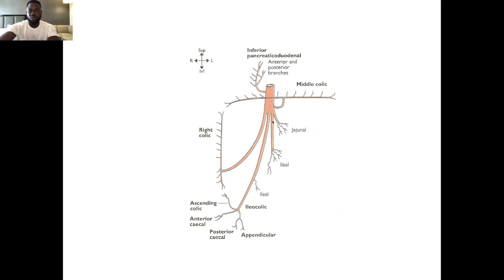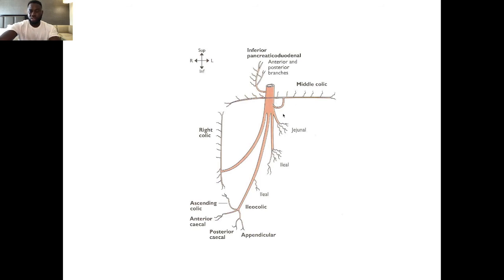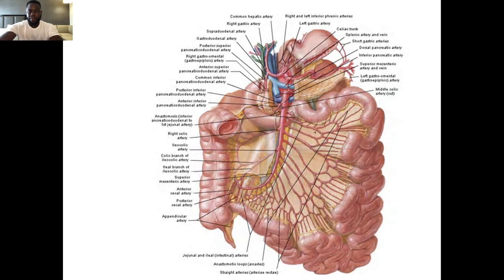To summarize the SMA: it supplies the midgut, which extends from the second part of the duodenum to the first two-thirds of the transverse colon. Its branches include the inferior pancreaticoduodenal artery, the jejunal branches, the ileal branches, the ileocolic branch (with appendicular, anterior and posterior cecal sub-branches), the right colic branch for the ascending colon, and the middle colic branch for the transverse colon.